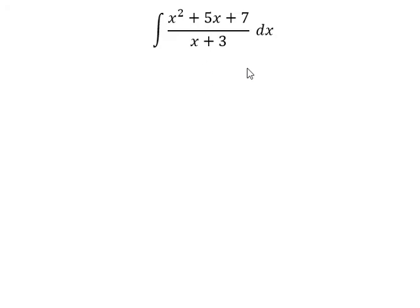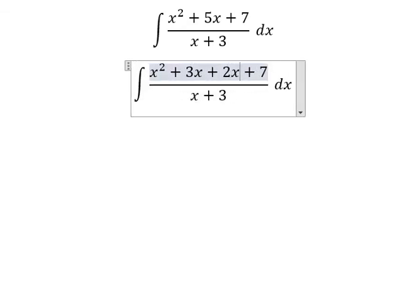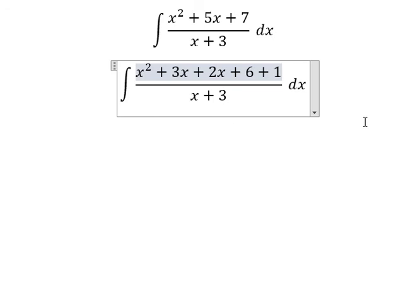Now I will show you. For 5x, we can rewrite it as 3x plus 2x. For 7, we can rewrite it as 6 plus 1, because I want to create a factor that can be divided by x plus 3.